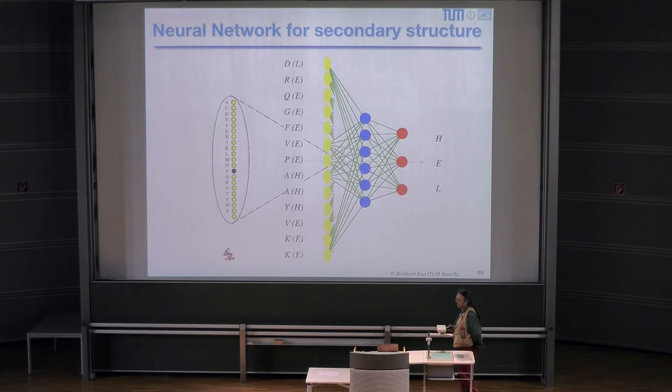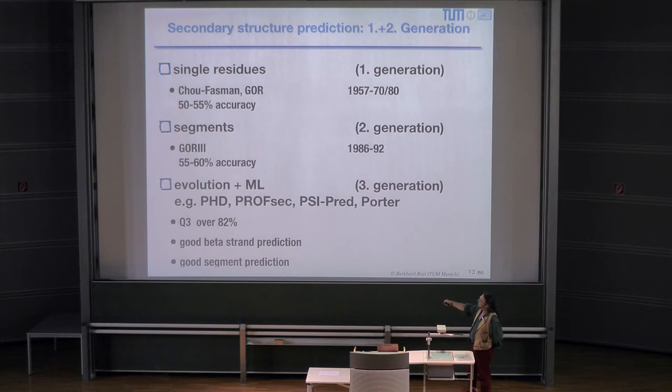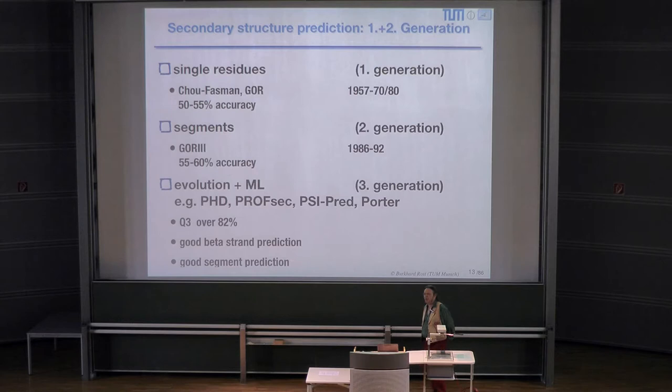The major breakthrough really comes from using, instead of a single vector, the evolutionary information. Here are a couple of tools — Porter, based on a system of neural networks; PsiPred, based on neural networks; and ProfSec and PHD, all based on neural networks. The overall accuracy now moved from something like 60% to over 80%, and this number increases because the databases grow. It's a good prediction for beta-strand and a good prediction of segment length.